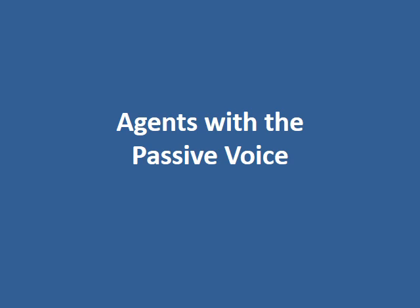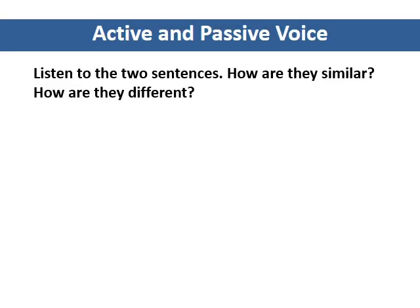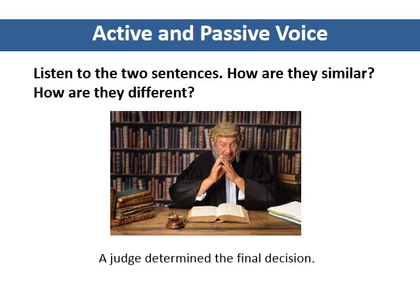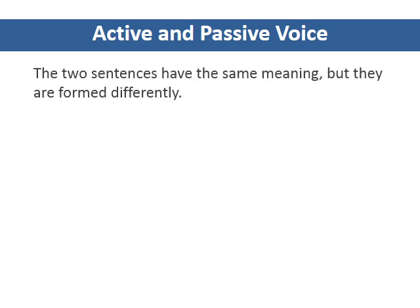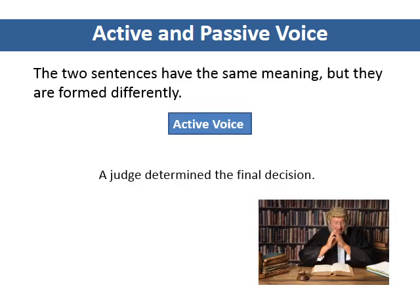Agents with the Passive Voice. Listen to the two sentences. A judge determined the final decision. The final decision was determined by a judge. The two sentences have the same meaning, but they are formed differently. In this sentence, the writer uses the active voice.